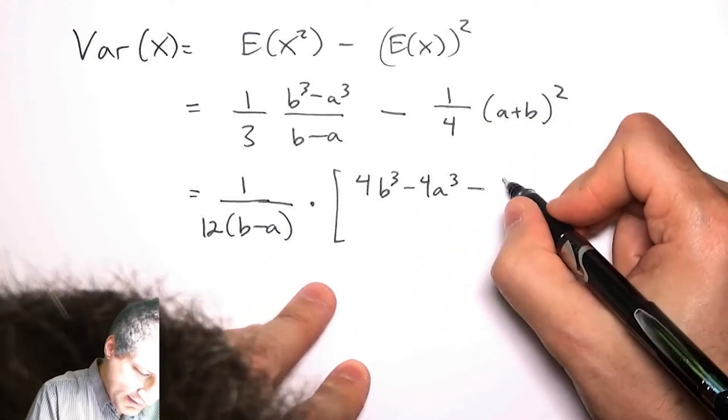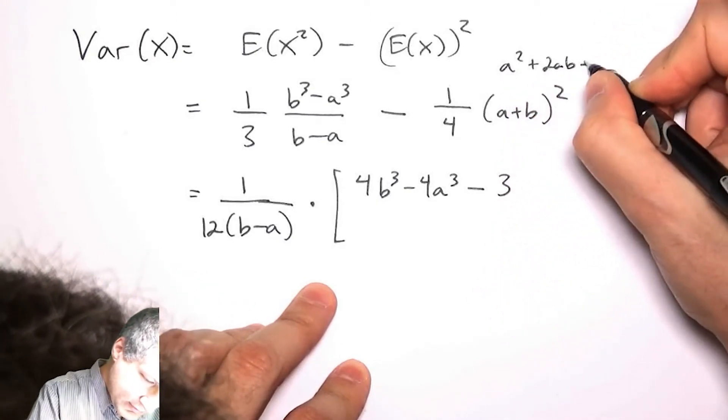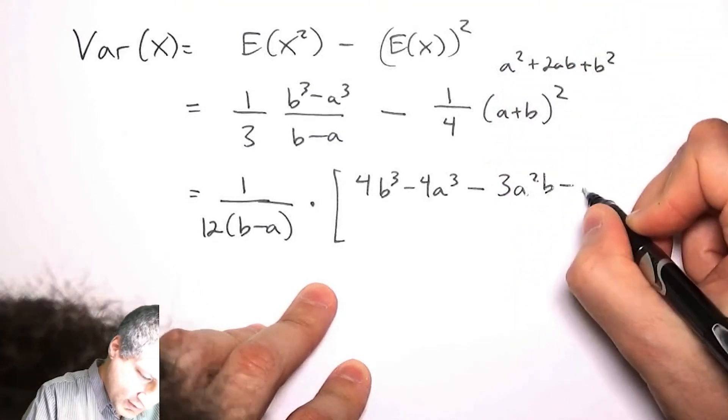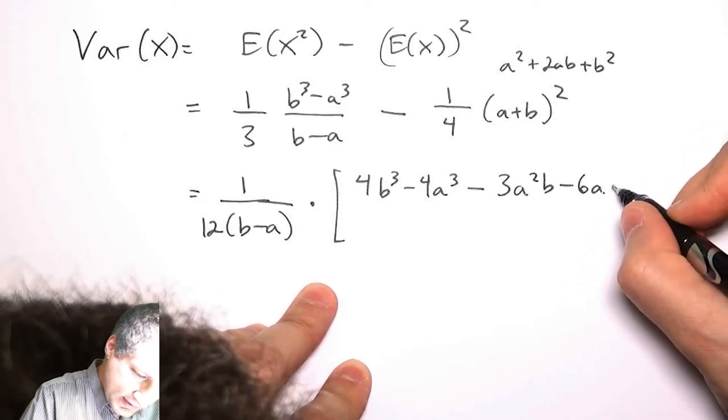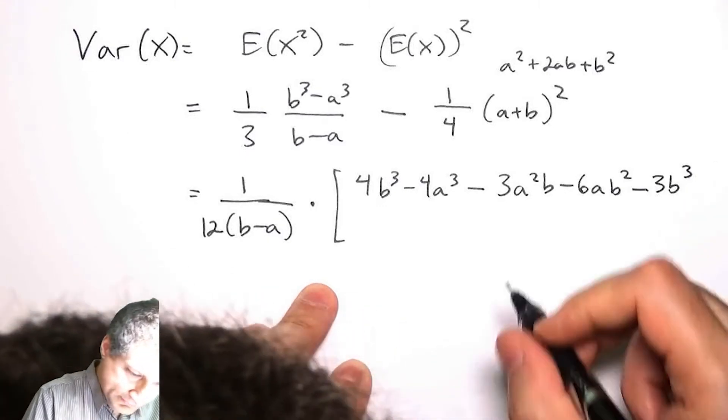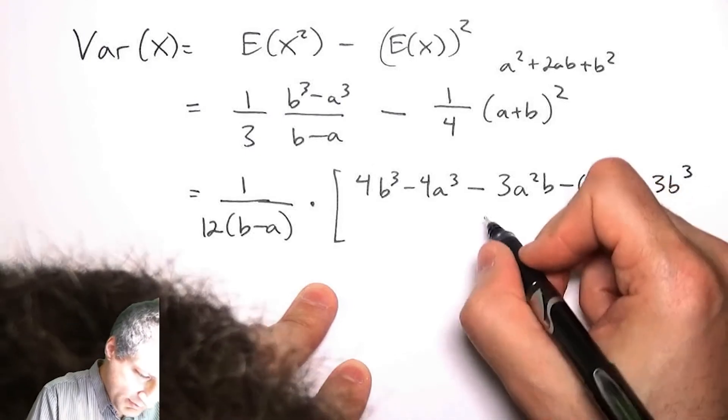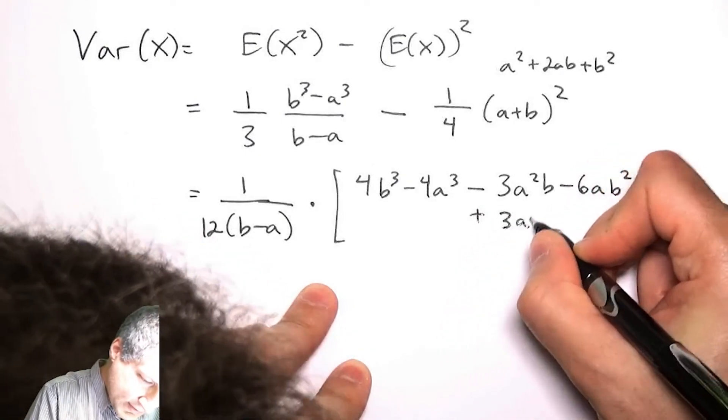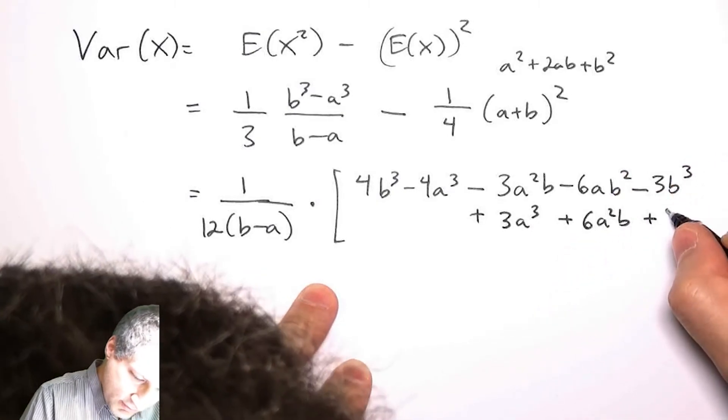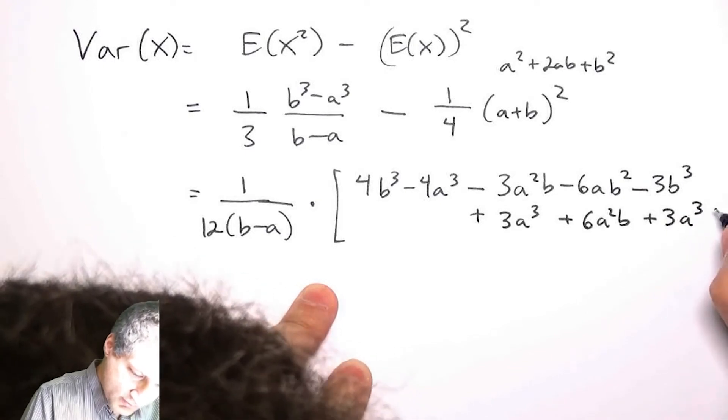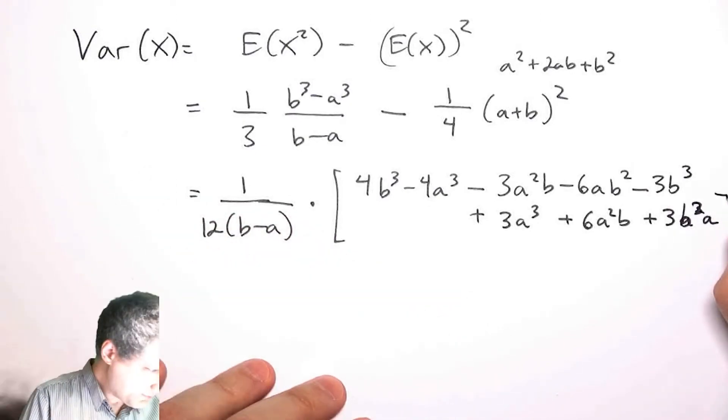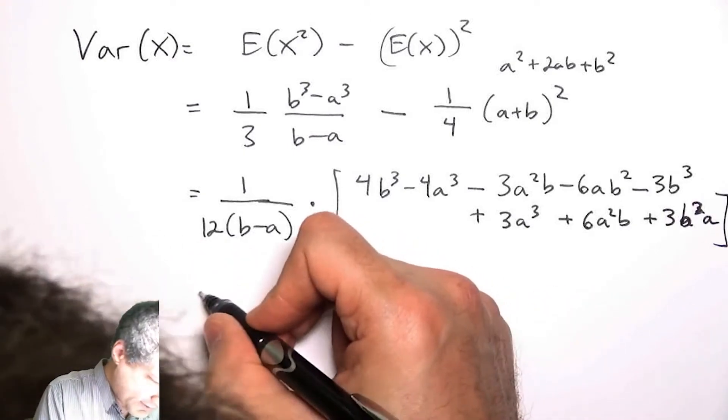That means on the top I have 4b³ - 4a³, and over here I have to multiply this all by (b-a), so I get 3a²b - 6ab² - 3b³ plus 3a³ + 6a²b + 3ab². I hope I don't screw this up. Can that be right? Oh, b cubed—sorry, b²a.